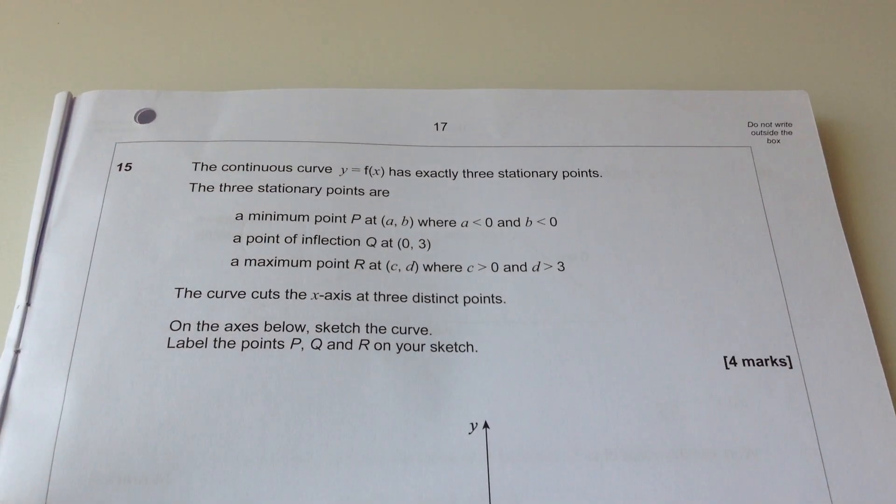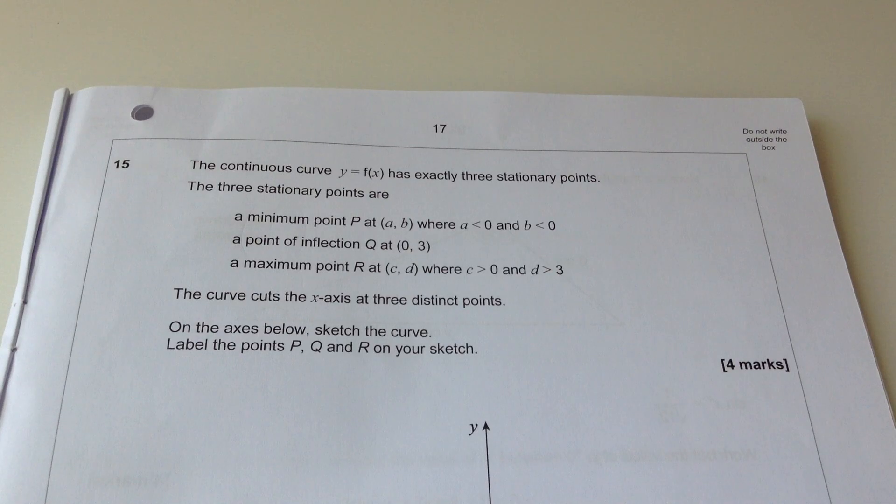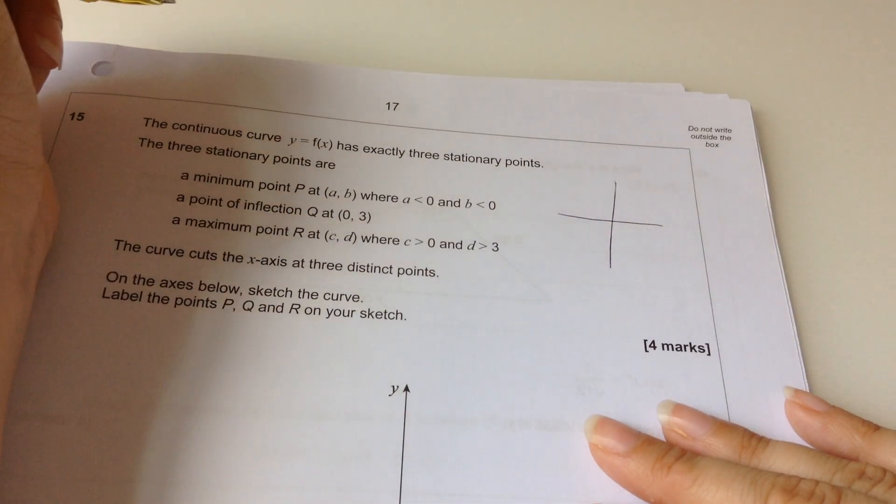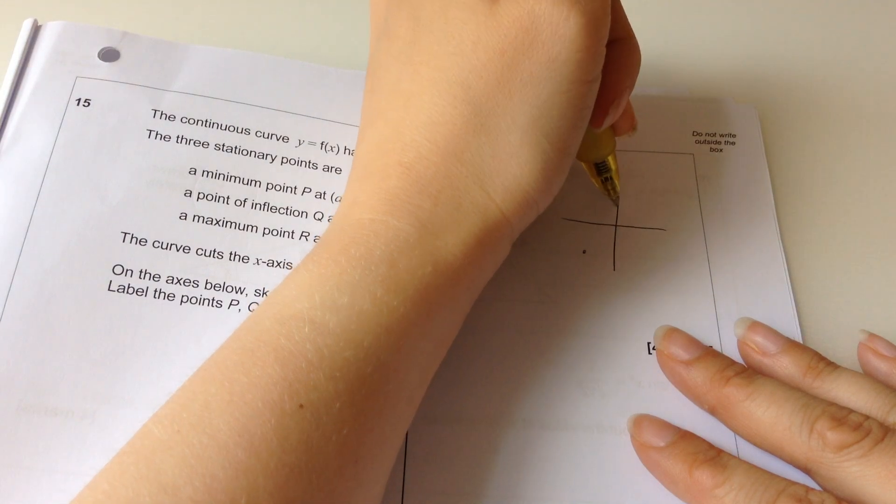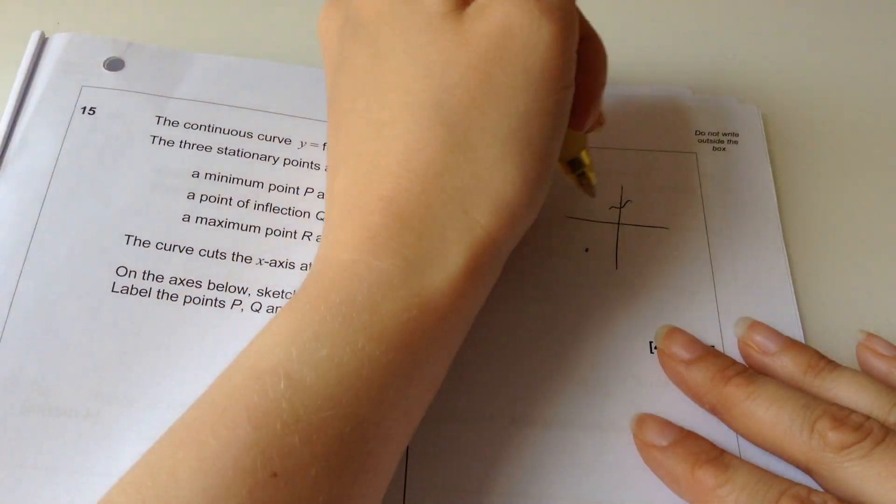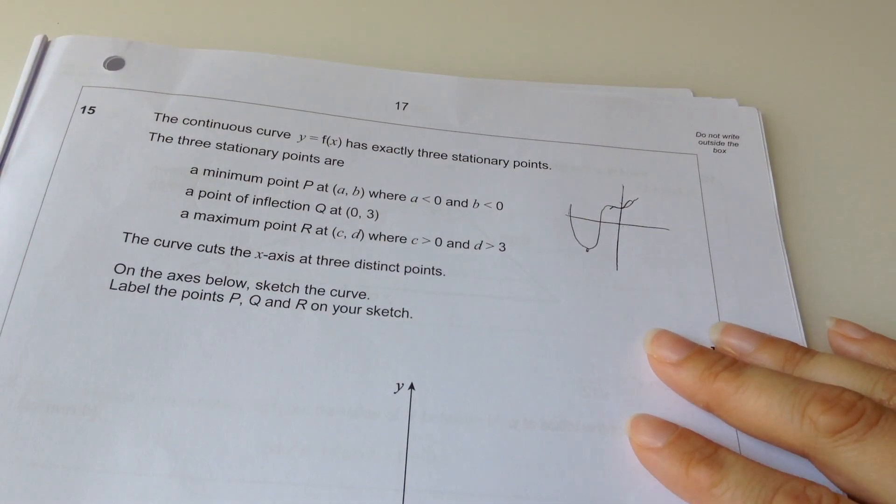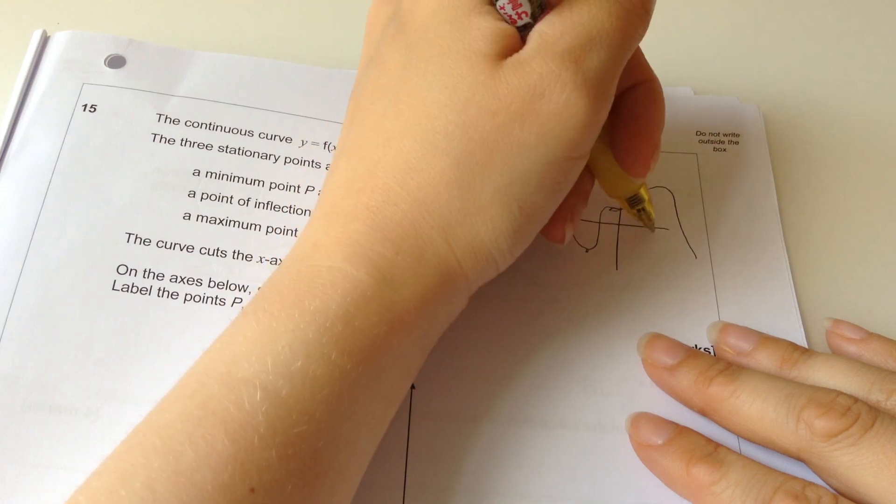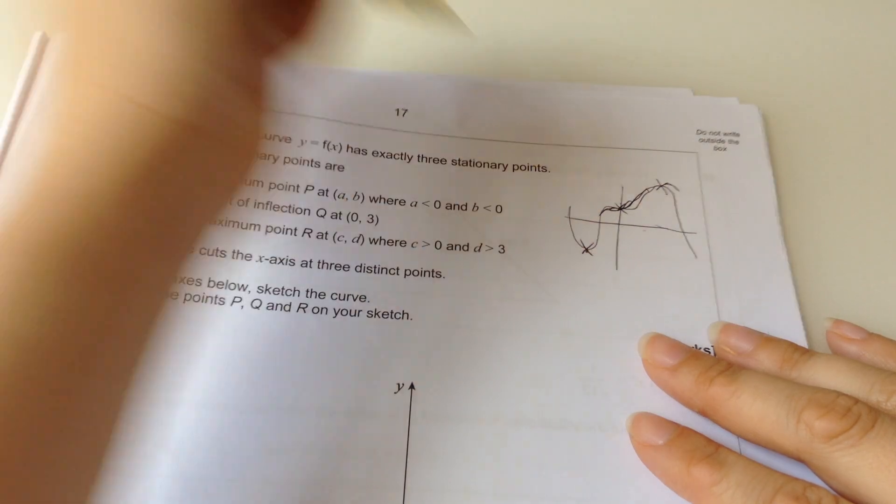Hmm. This is long. The continuous curve, y equals f of x, has exactly three stationary points. The three stationary points are a minimum at A, B, where they're negative. Okay. And then, so it's got, let me just sketch. So it's got a minimum at some negative point. It's got a point of inflection at 0, 3. So it's going to do something like that. Okay. And then it's got a maximum where things are positive and higher than 3. So it's something like that.